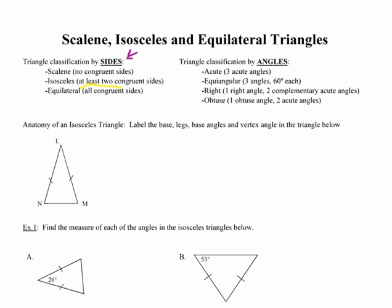Now we can also classify triangles by their angles. An acute triangle is going to be a triangle that has three acute angles. An equiangular triangle is going to be a triangle that has three angles of sixty degrees each.